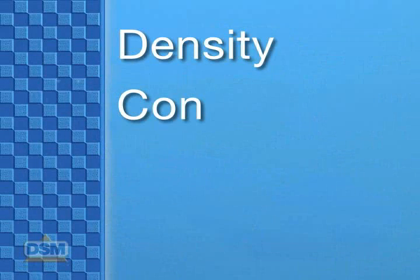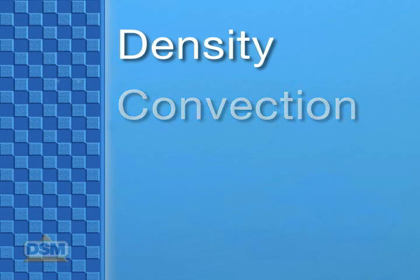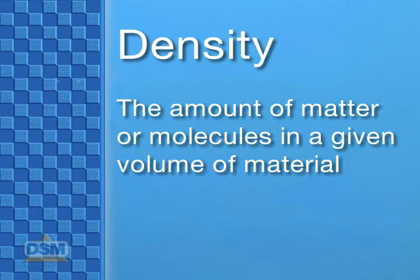At this point we're going to introduce the terms density and convection to the students by explaining that density is the amount of matter or molecules in a given volume of material. When air is heated, its molecules begin to move faster, bounce off of each other, and spread farther apart. When this happens, the heated air becomes less dense — in other words, there are fewer molecules in a given space than in the cooler air around it.